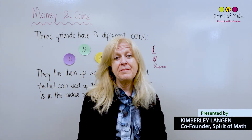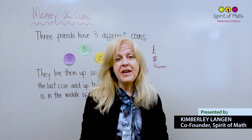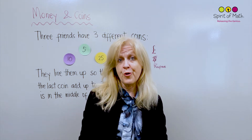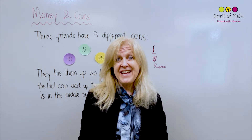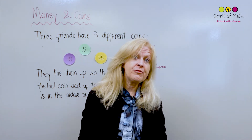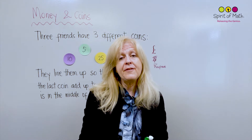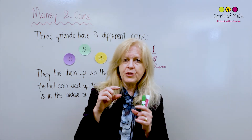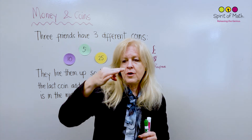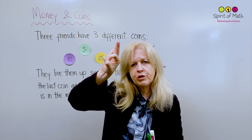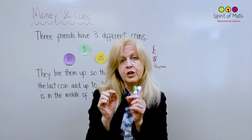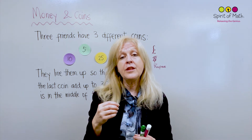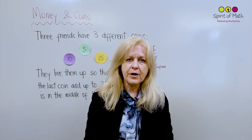Hello everybody, I'm Kim Langan and I'm here to talk about coins and the order in which you can put coins. Now let's first of all talk about a coin. A coin is a bit of money, so you can have bills which are paper and coins which are usually round — sometimes they can be octagonal or other shapes as well — and those are coins, and that's part of money.